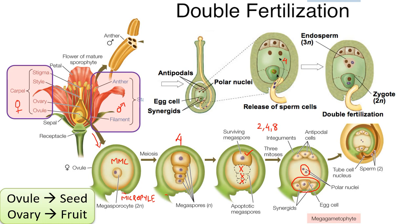There are two male gametes. The first male gamete fuses with the egg cell, forming the zygote — this is the first sexual fusion. The second male gamete fuses with the secondary nucleus, forming a triploid cell called the endosperm mother cell, which later forms the endosperm. Because there are two sexual fusions, this process is called double fertilization in angiosperms.